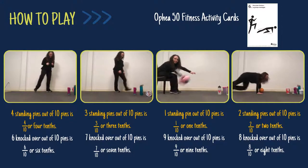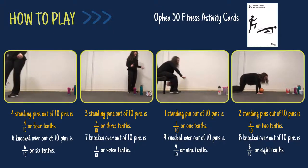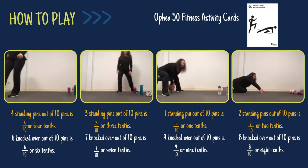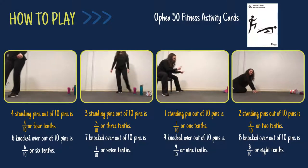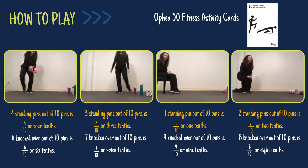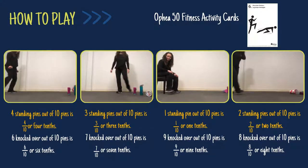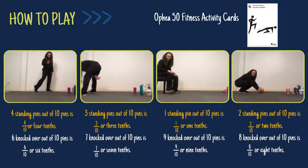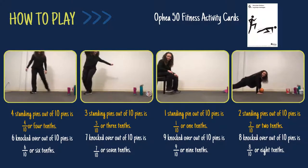In each video, you will see a different attempt at knocking down the 10 pins. Below each video are the annotations of the fractional sets modeled in the video. While attempting to knock down the objects, you can explore different throws, including an underhand roll, overhand throws, and throwing backwards.